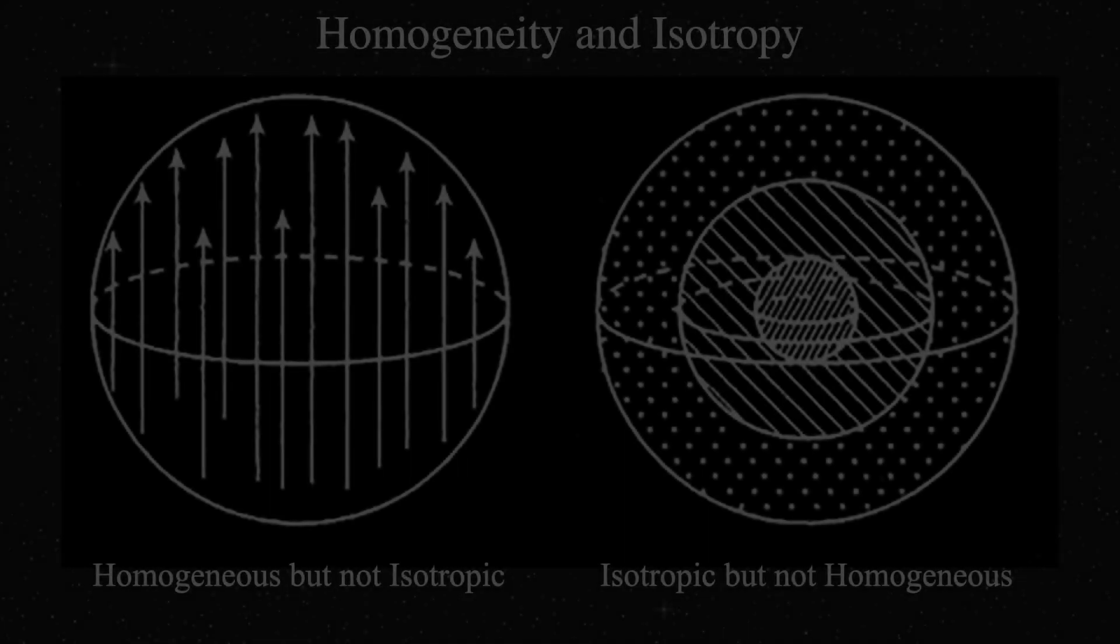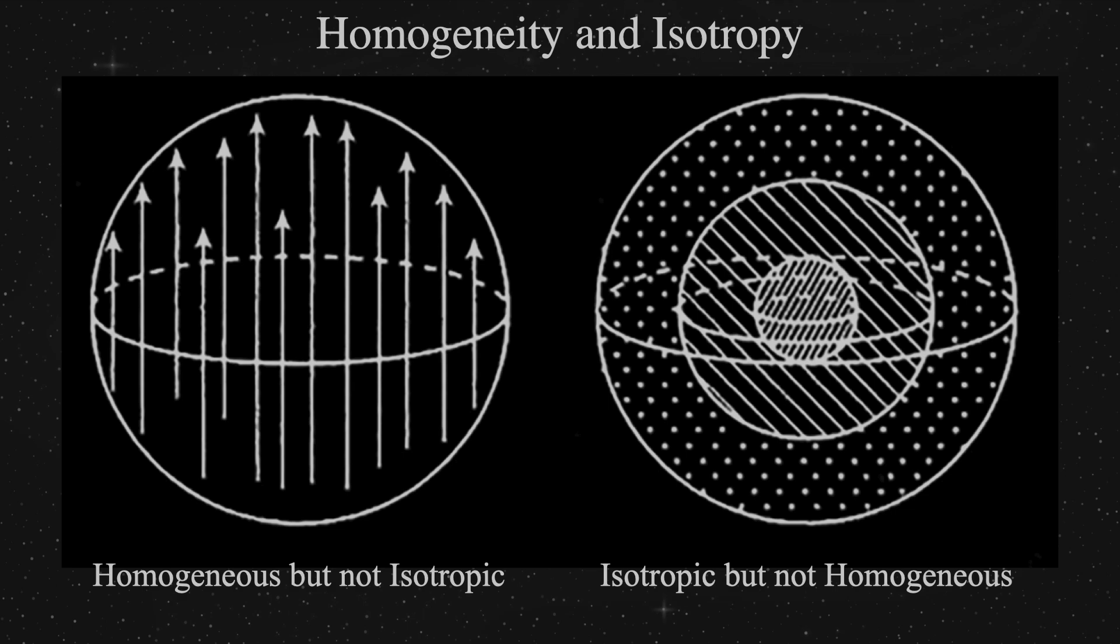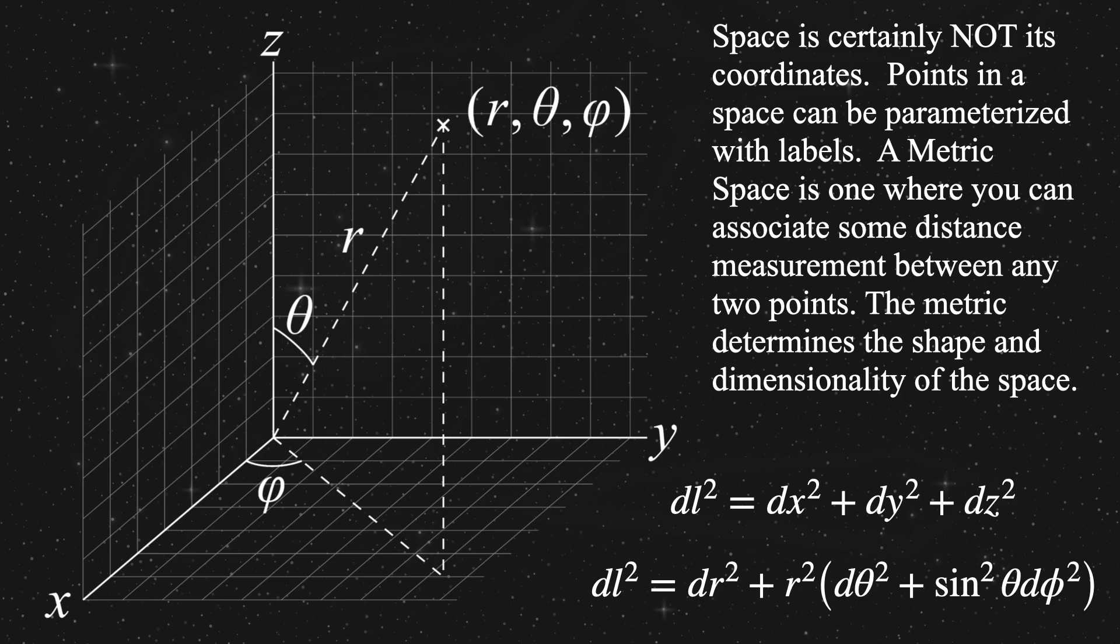Both homogeneity and isotropy are part of what we call the cosmological principle. But it's also kind of intuitive in a way, and it helps us. Another thing that it helps us with is the nature of our coordinate systems. Now this is where we're starting to talk about what we really mean by the nature of space.